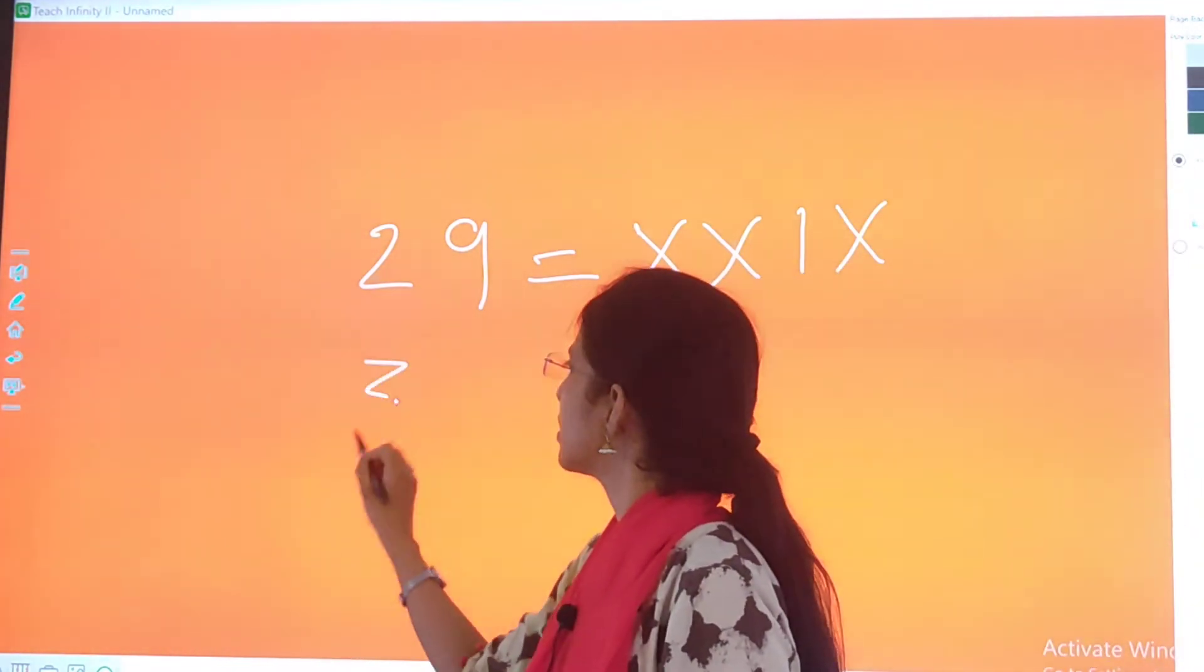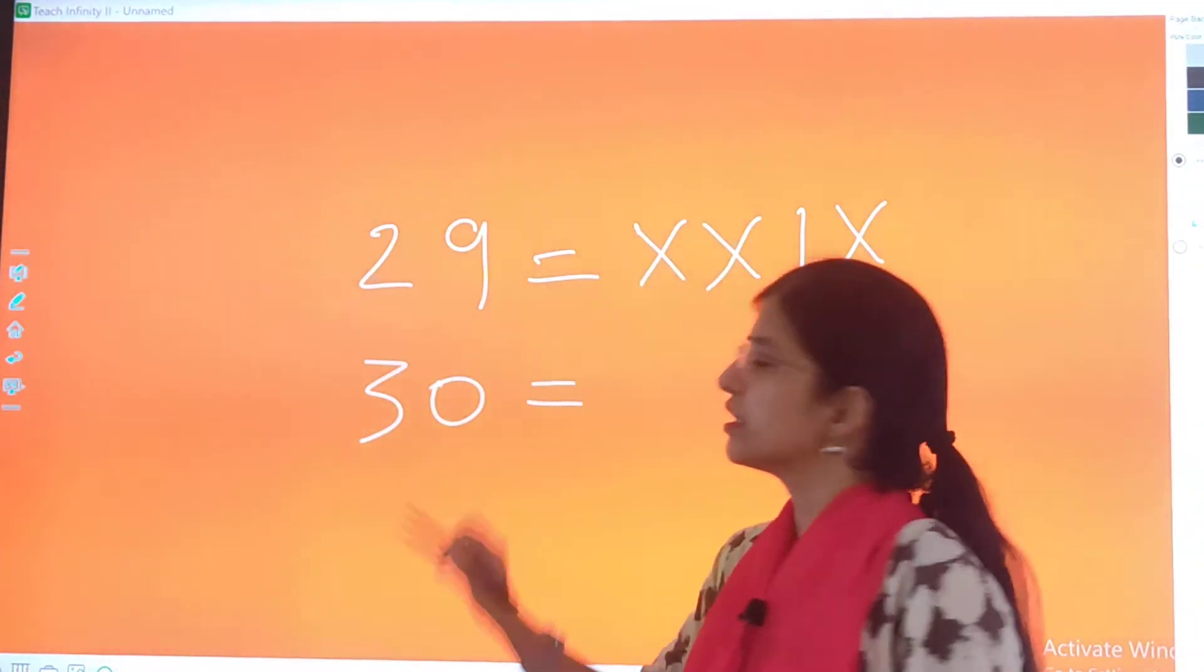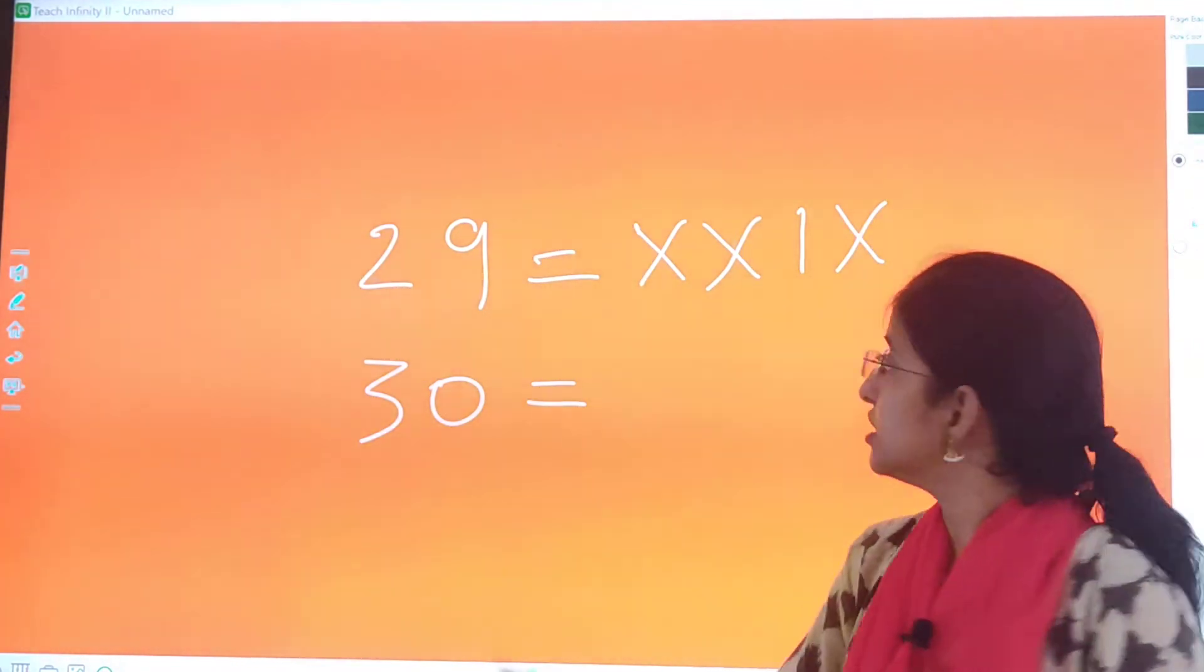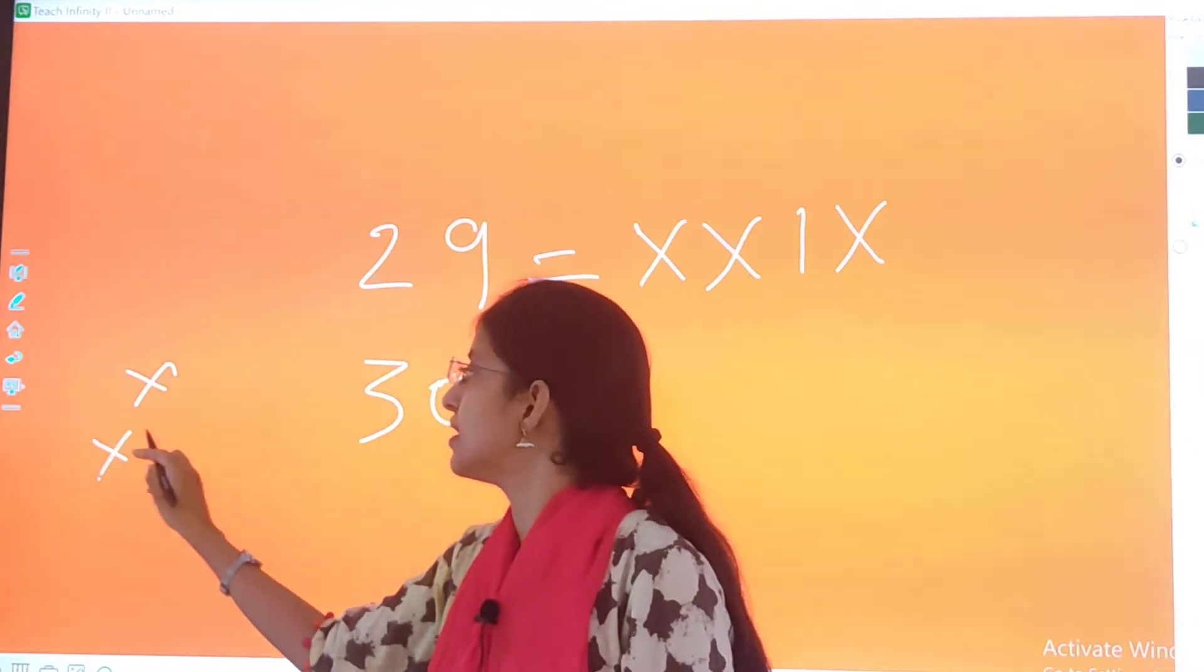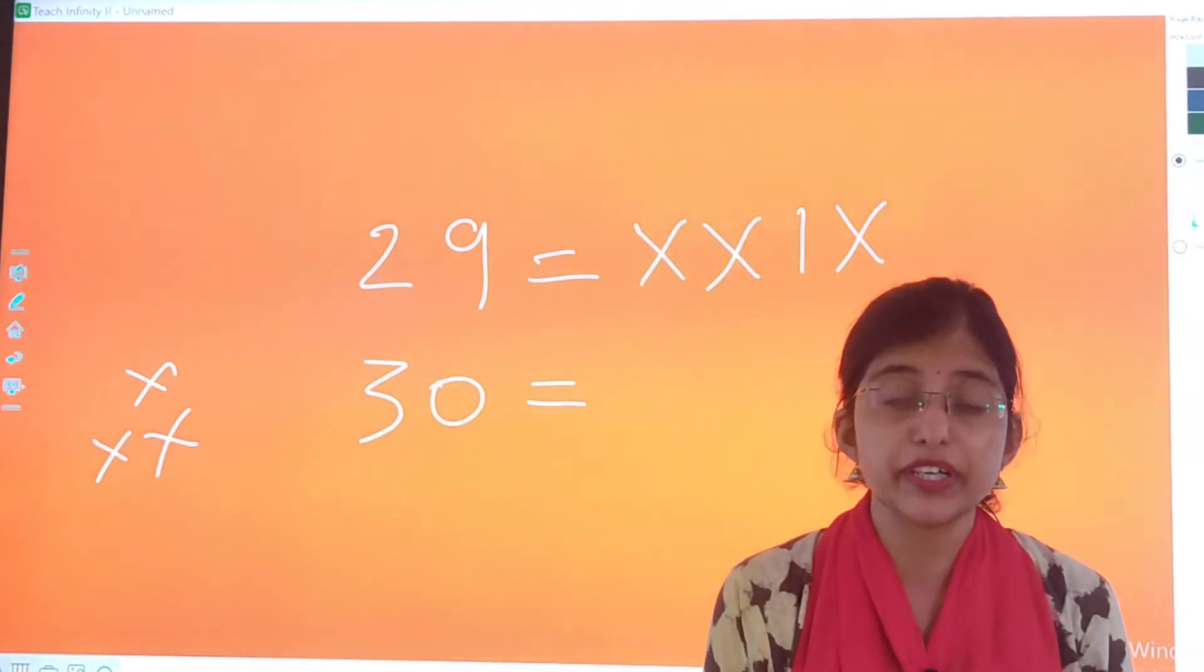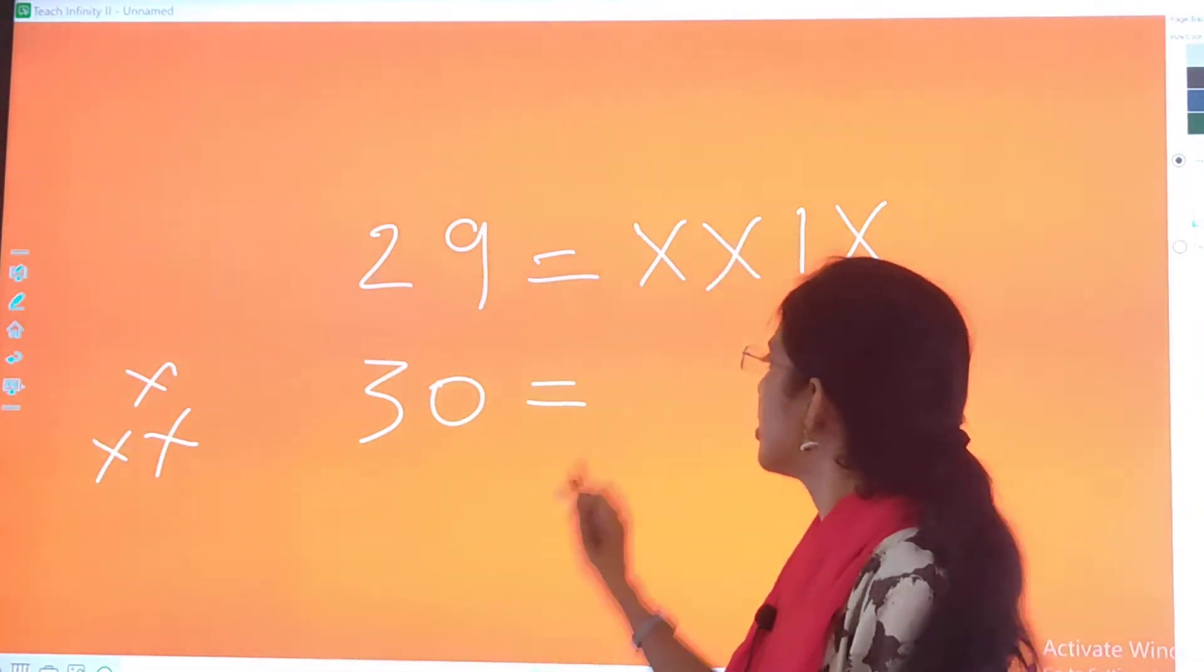Then comes 30. So 30 will be represented - if 10 is represented as X, 20 is represented as double X, then 30 will be represented as triple X.